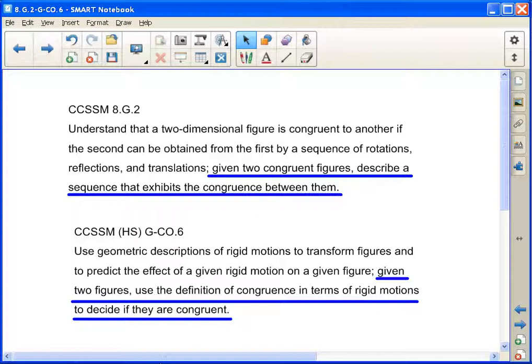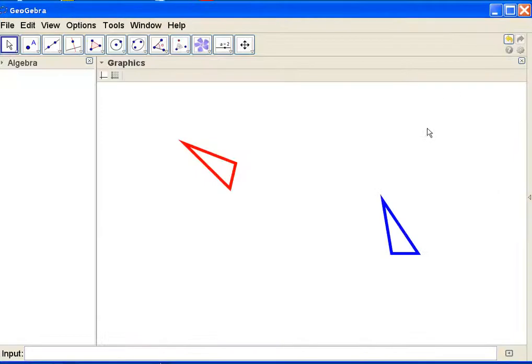What we're going to be doing is taking two congruent figures and exhibiting the congruence between them by finding a sequence of transformations. I'm going to be utilizing GeoGebra.